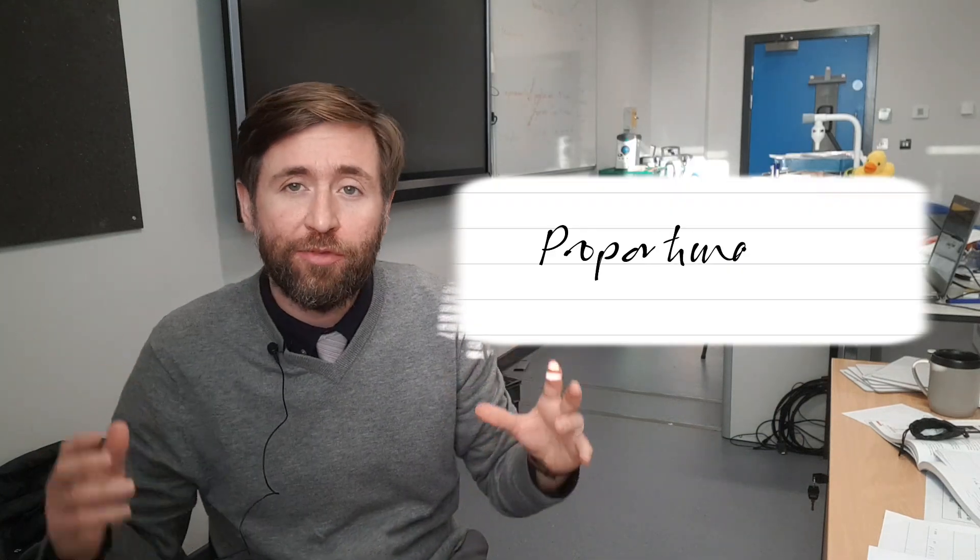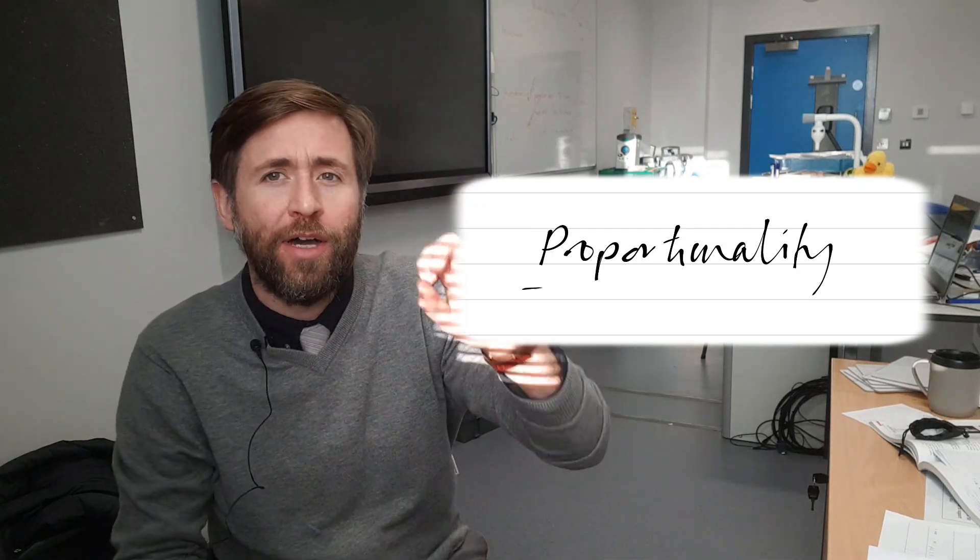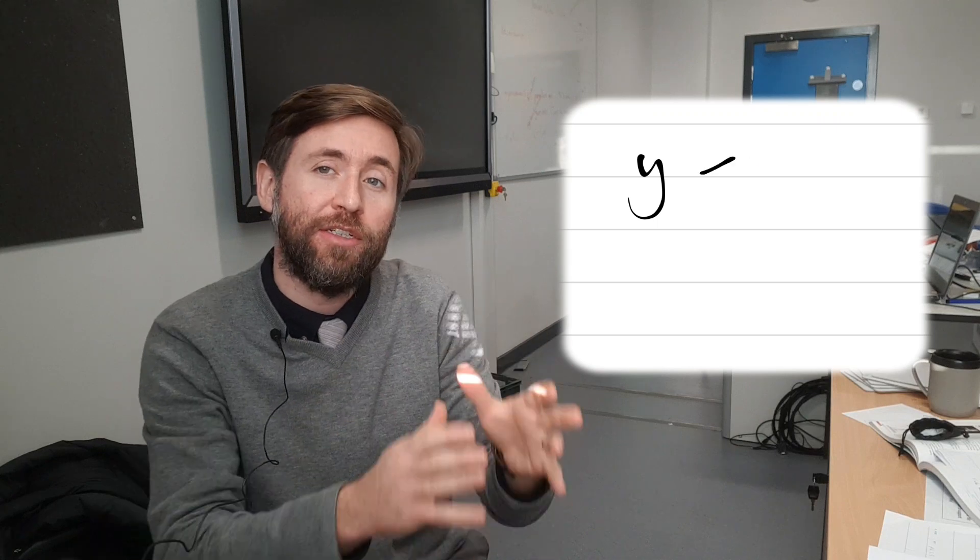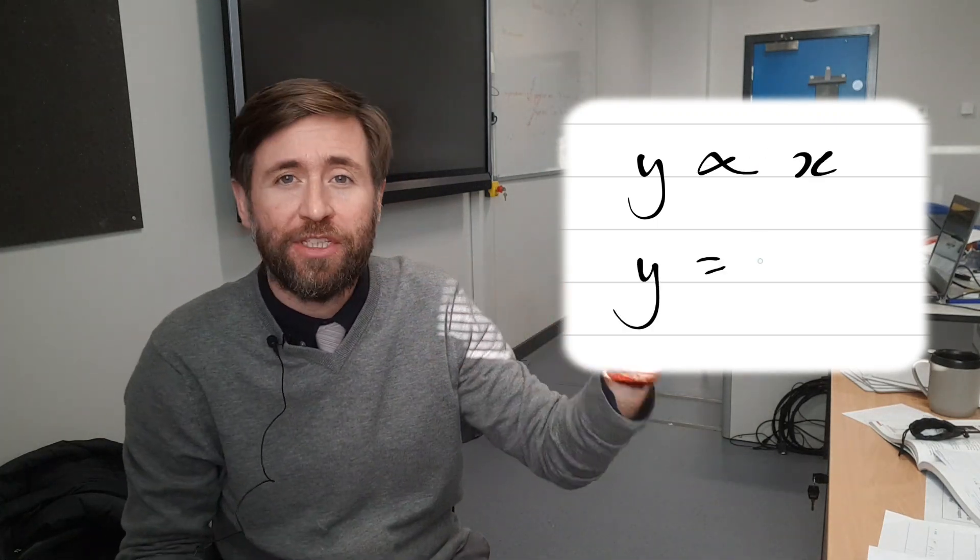So in physics, we're always looking for proportionality. We're always looking to boil our laws down to y is proportional to x. One variable is proportional to another because then we can write an equation and work out the constant of proportionality, something like y equals kx.